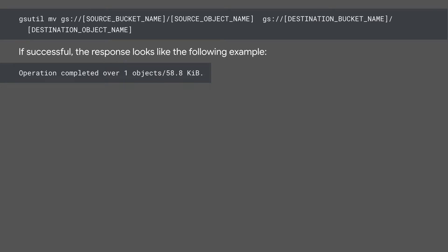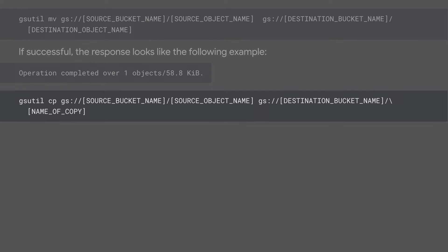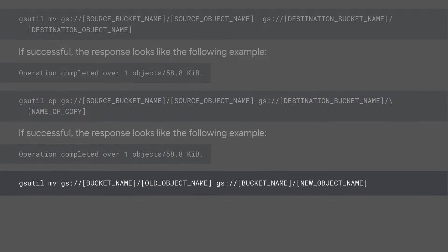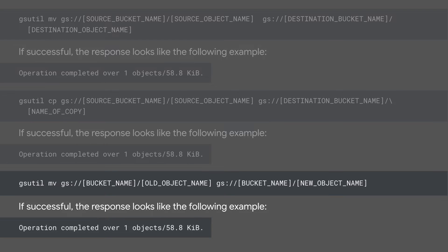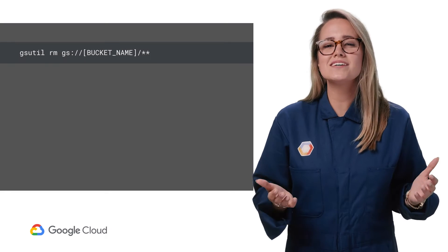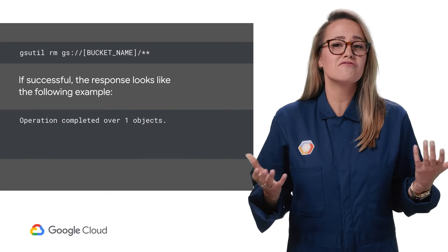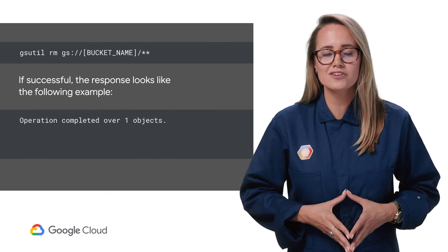So now that we know what's in your bucket, let's talk changes. Rename an object with a few specific steps. Copy the object, making another instance of it, either in the current bucket or in any other bucket. Move the object into a new bucket. And for a more permanent change, you can always delete an object, removing it from the bucket and, effectively, from your Cloud Storage.